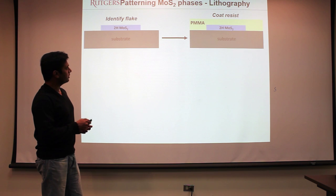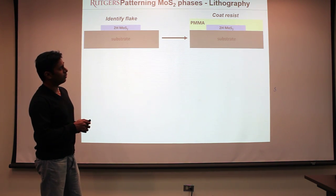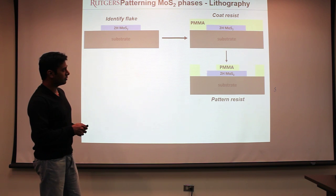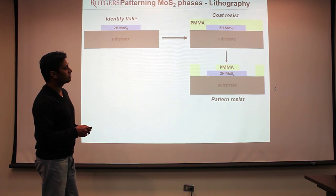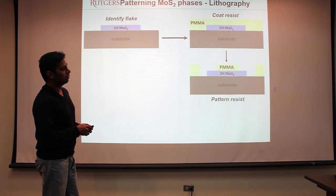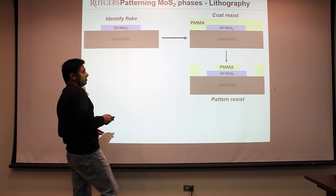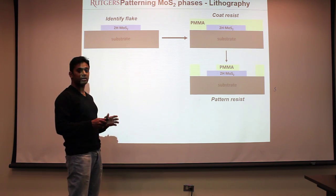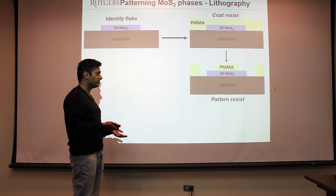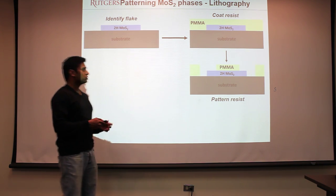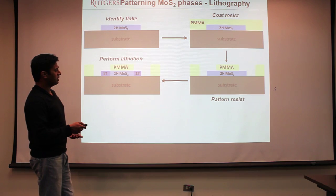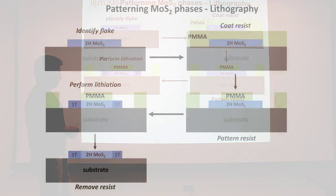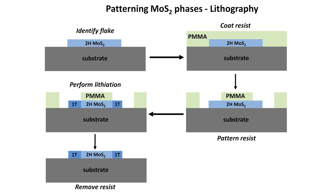Here we want to pattern the edges of the flake to the 1T phase, so we remove the polymer at the edges. If we want to convert the whole flake to the 1T phase, we can remove the polymer across the entire flake. The polymer serves two functions: it holds the flake on the substrate during washing, and it acts as a mask. We then soak the sample in butyllithium — the exposed regions get converted to the 1T phase — and finally remove the polymer.